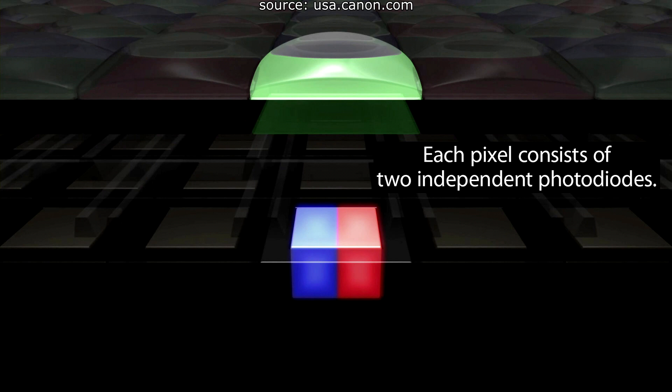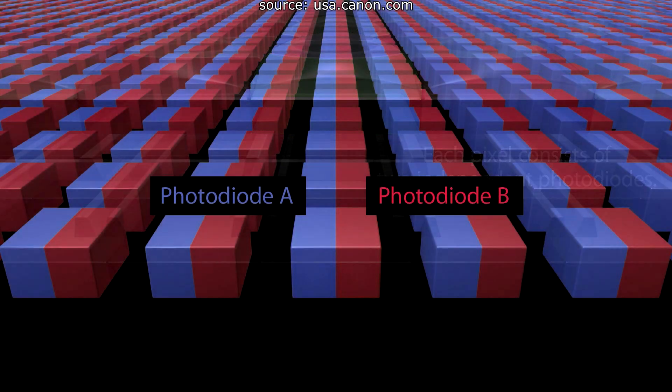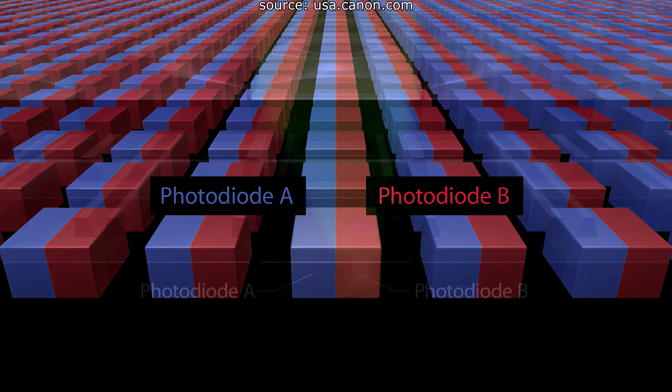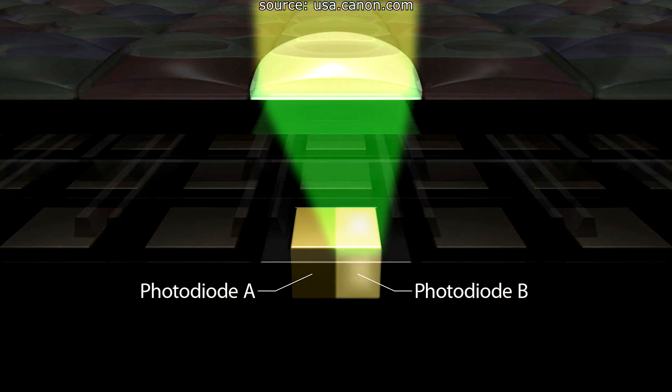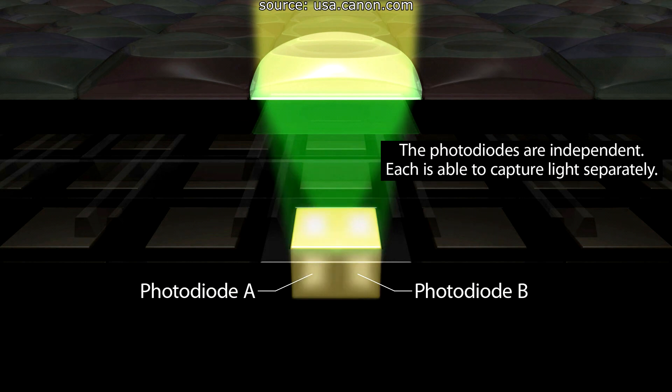With the dual pixel autofocus, it's on the sensor. It has these little micro lenses. Behind those micro lenses for each single one it has two photodiodes. They're set up vertically and then it uses that for the phase difference autofocus. That gives it distance to subject and it also gives it the direction of focus.